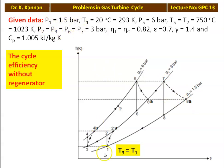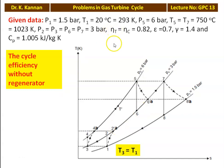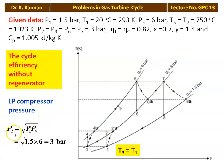Turbine efficiency and compressor efficiency are equal to 0.82, effectiveness of heat exchanger is 0.7, gamma equal to 1.4, and Cp equal to 1.005. The intermediate compressor pressure: P2 equal to square root of P1 into P4, which is square root of 1.5 into 6, equal to 3 bar. In this cycle we calculate temperatures T2A, T4A, T6A, and T8A using the isentropic compression and expansion expressions, then calculate turbine work, compressor work input, heat supply, and cycle efficiency. For the LP compressor: T2 equal to T1 into (P2/P1) to the power (gamma minus 1)/gamma, which is 293 into (3/1.5) to the power (1.4 minus 1)/1.4 equal to 357.2 Kelvin. Using compressor efficiency: T2A equal to T1 plus (T2 minus T1) divided by eta_C, which is 293 plus (357.2 minus 293) divided by 0.82 equal to 371.3 Kelvin.